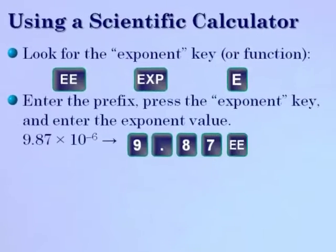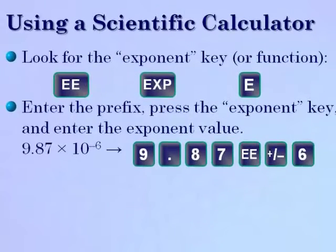So to enter the prefix, for example, with an EE key, to enter 9.87 times 10 to the minus 6, you would enter the digits 9.87, just like you would normally enter them. Then press the EE key for the exponent.